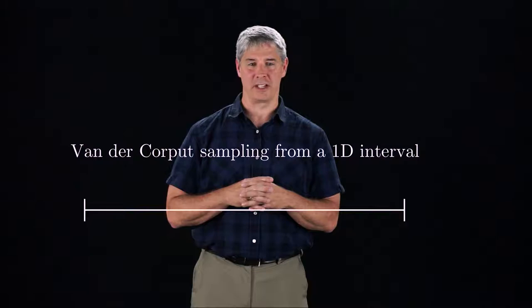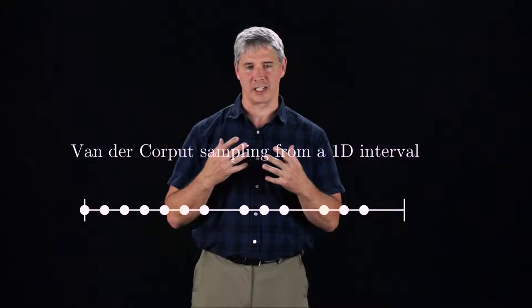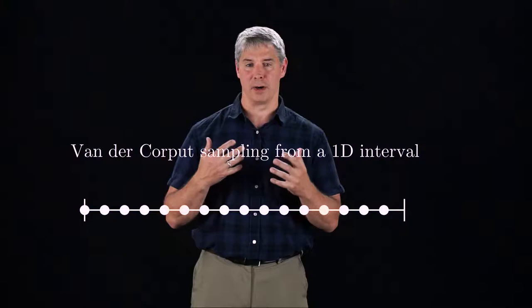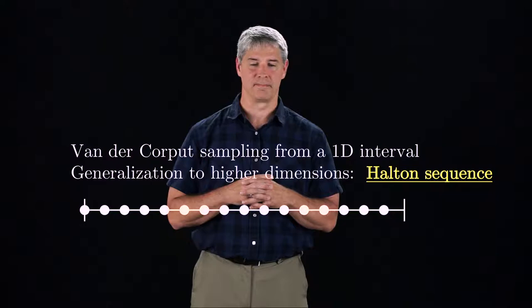For example, van der Corput sampling could be used on a one-dimensional state space. The van der Corput sequence is a deterministic sequence that jumps around the interval, providing a progressively finer, approximately uniform sampling of the interval. This is attractive since it results in something like multi-resolution sampling that increases in resolution until a solution is found. The generalization of the van der Corput sequence to higher dimensional spaces is called the Halton sequence. The algorithm designer can choose the sampling algorithm as best suited for the task.